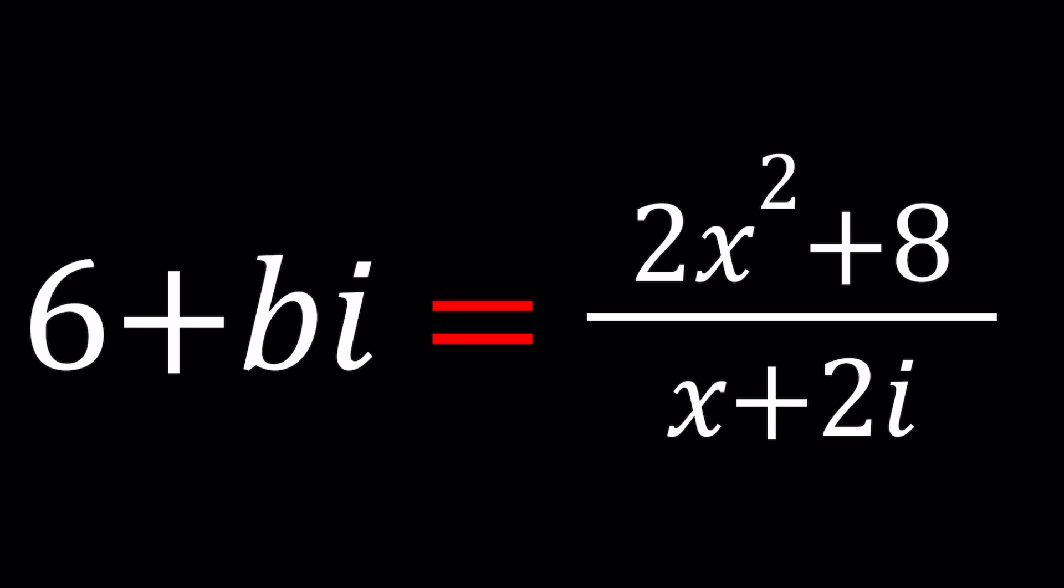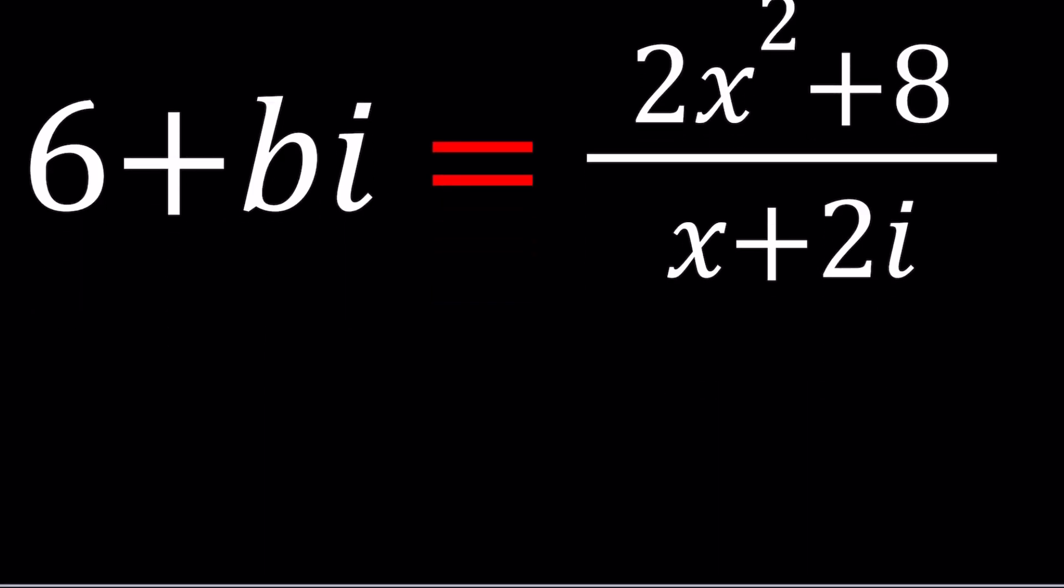We have 6 plus bi equals 2x squared plus 8 divided by x plus 2i. B and x are real numbers, and we're going to be solving for those values. I'll be presenting two methods, and let's start with the first one.